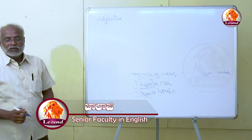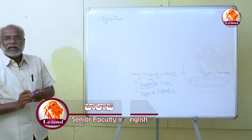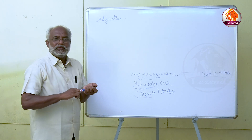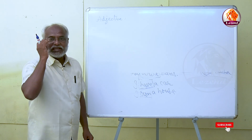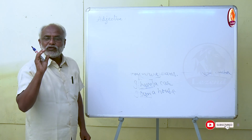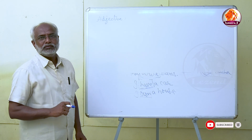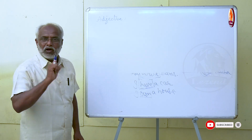Adjective. What is an adjective? An adjective is a word which says about the quality of a noun. It qualifies a noun.